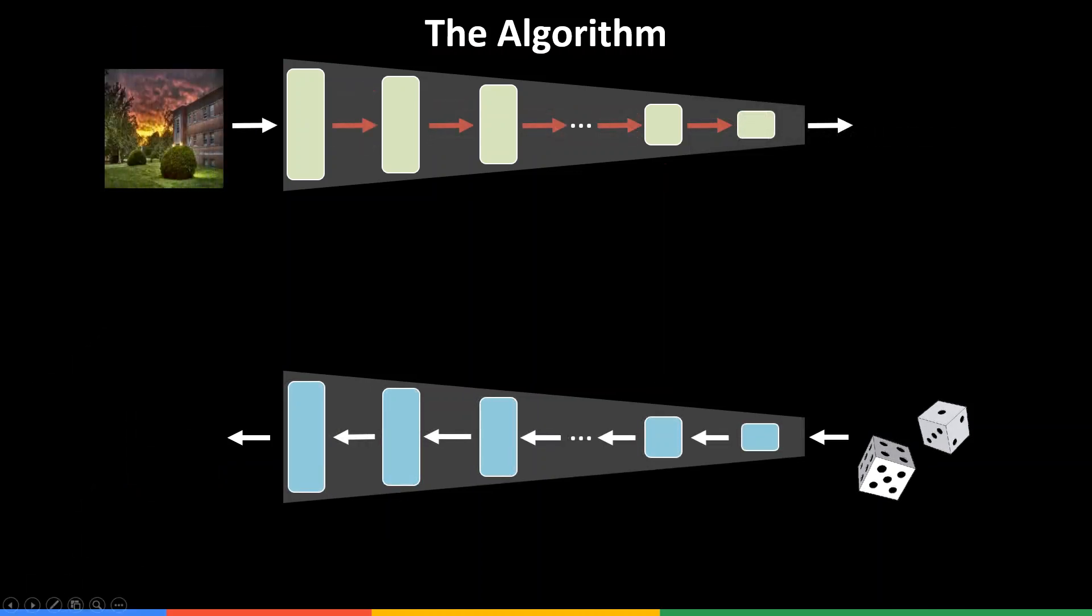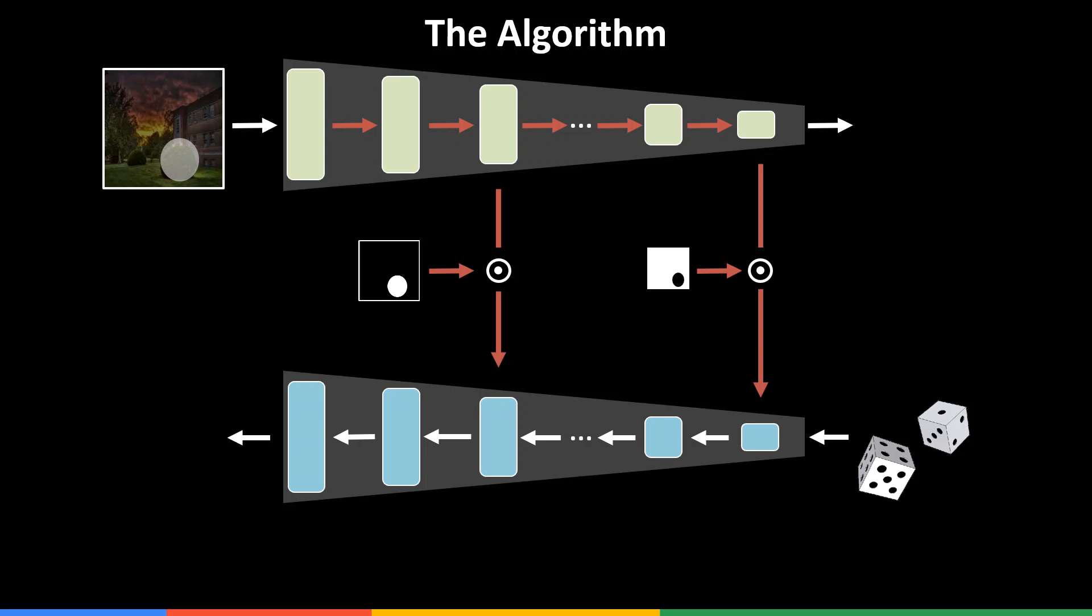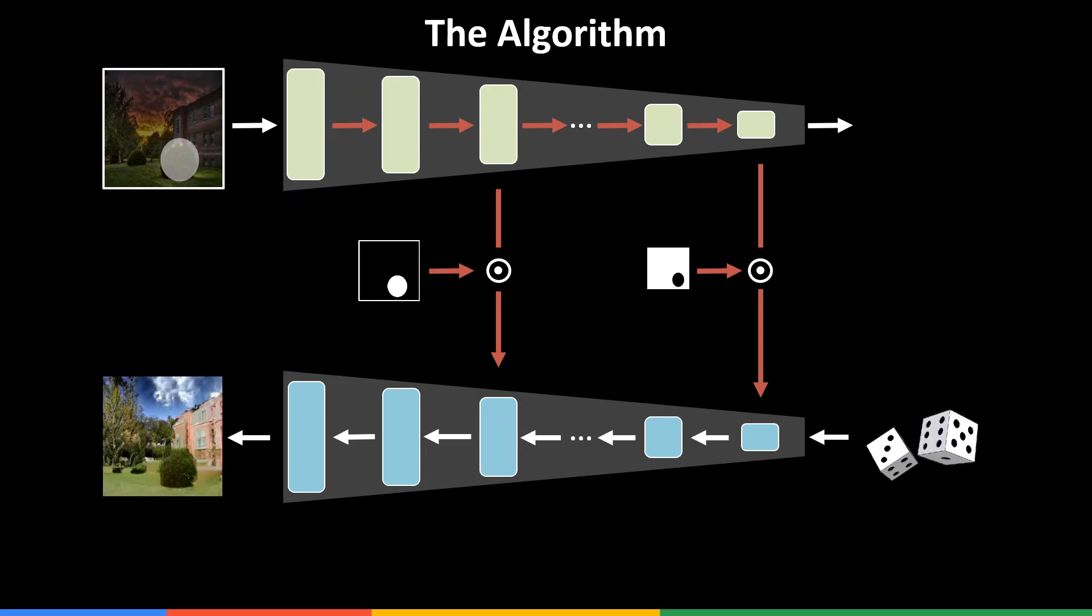Note that we don't have to use features from the same semantic level over the whole image. We can use a spatial mask to condition different regions on different semantic levels. We can use this to semantically edit images. For example, modifying the background while keeping the bush unchanged.